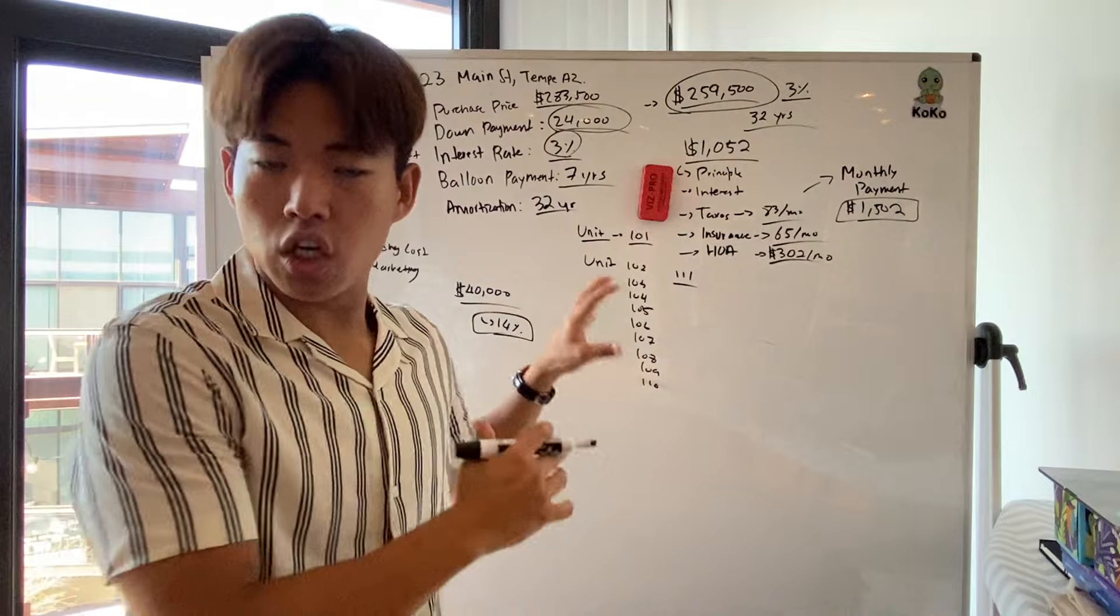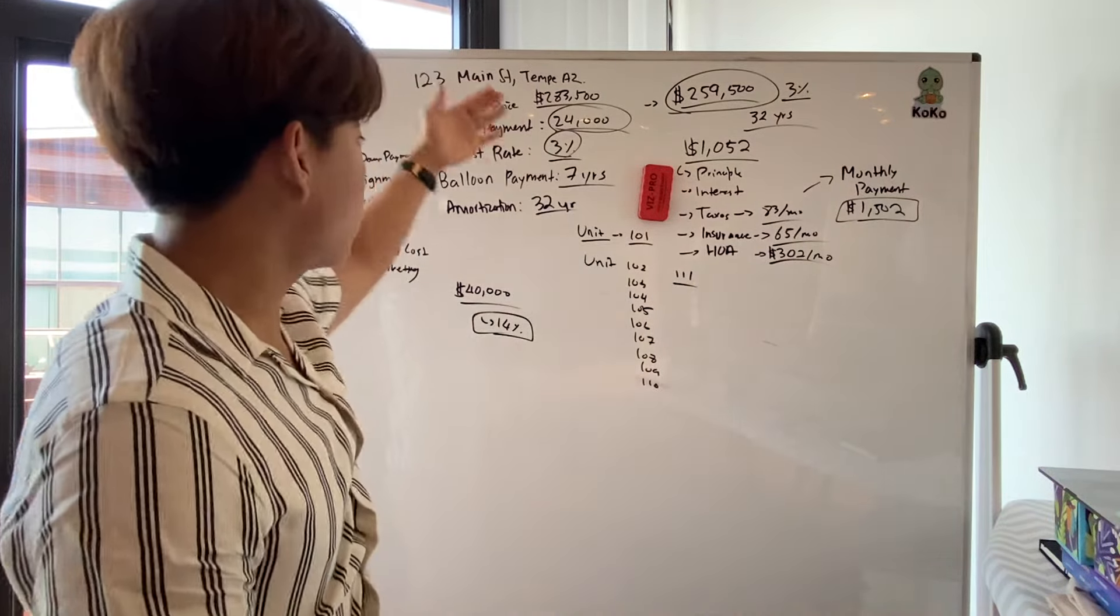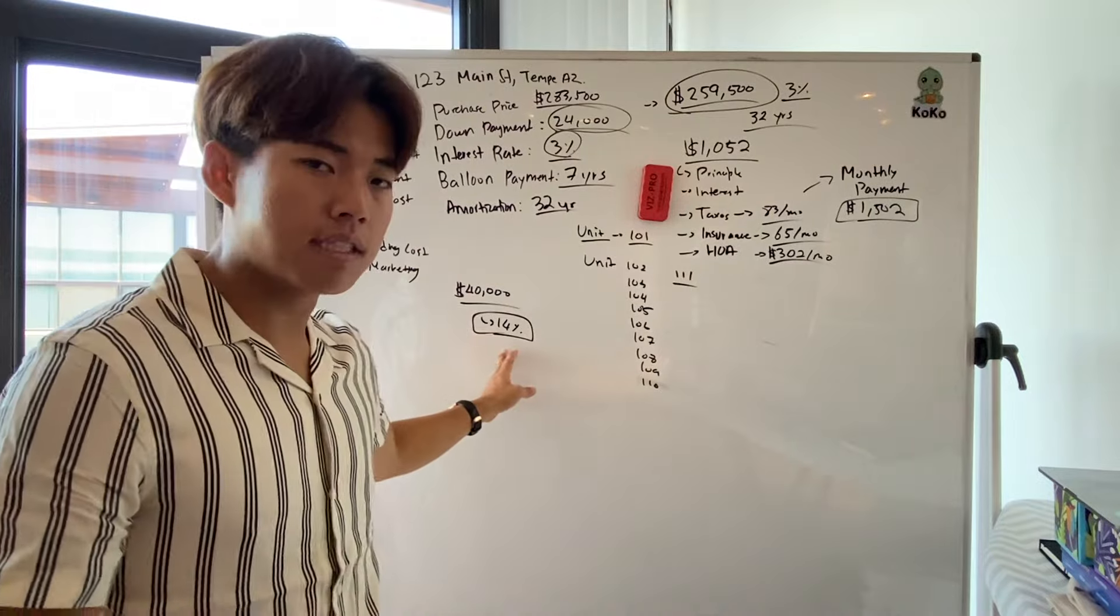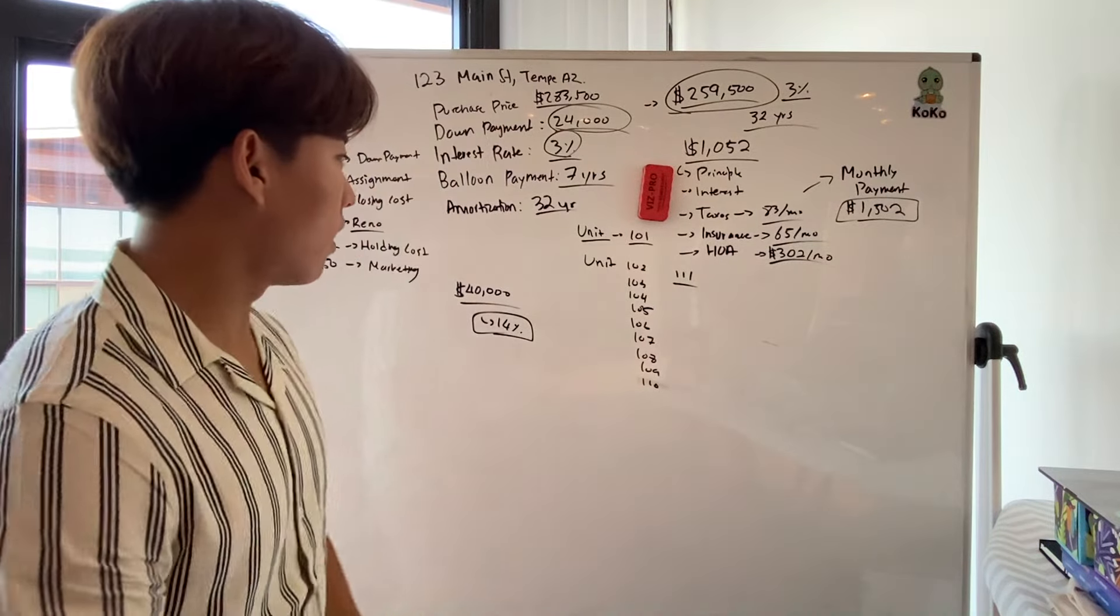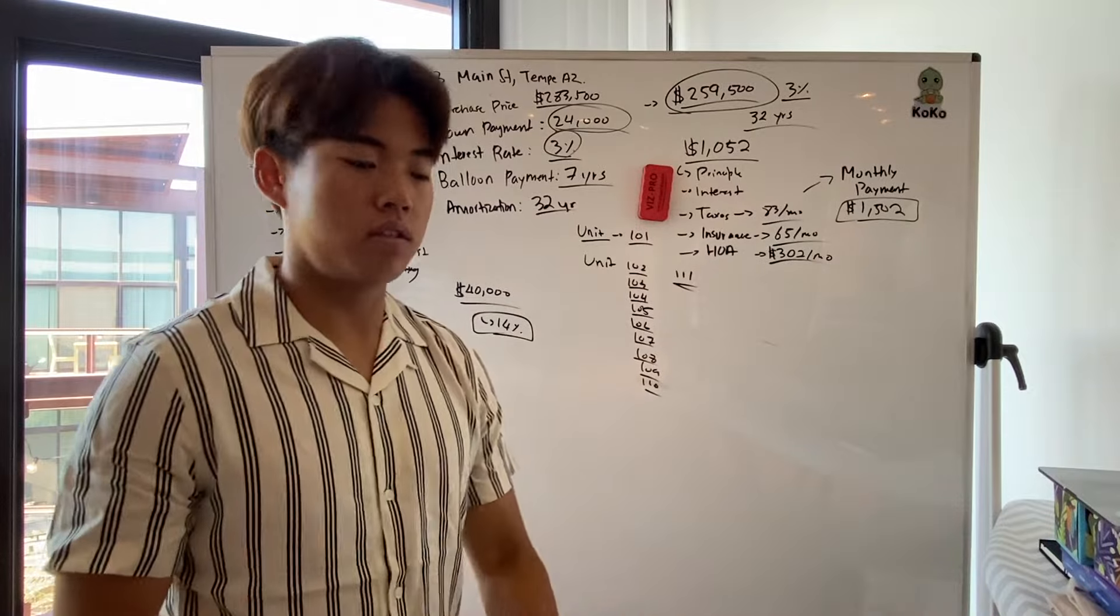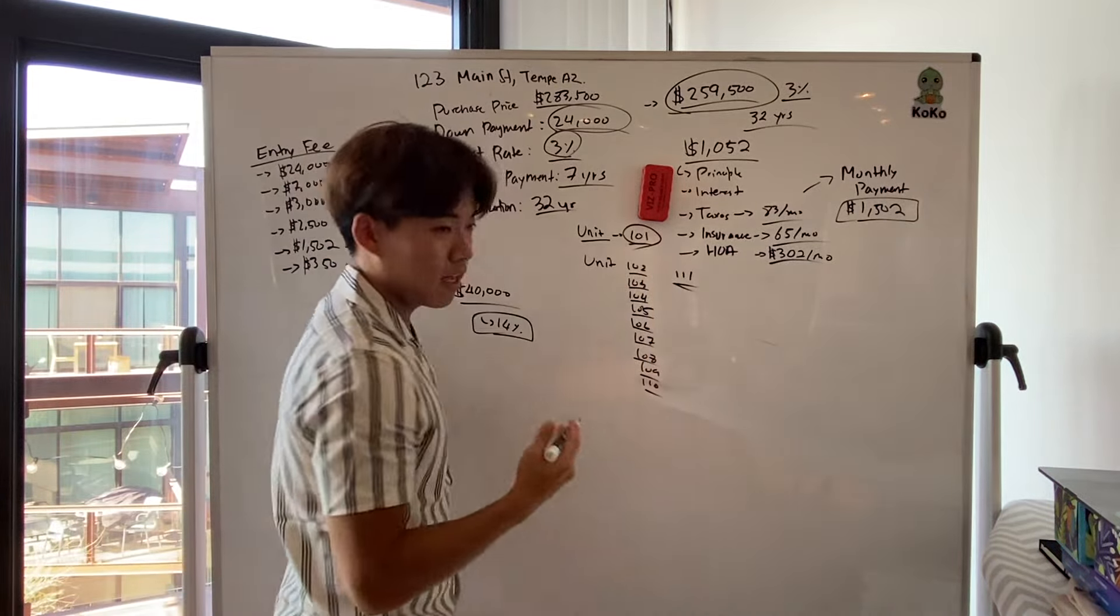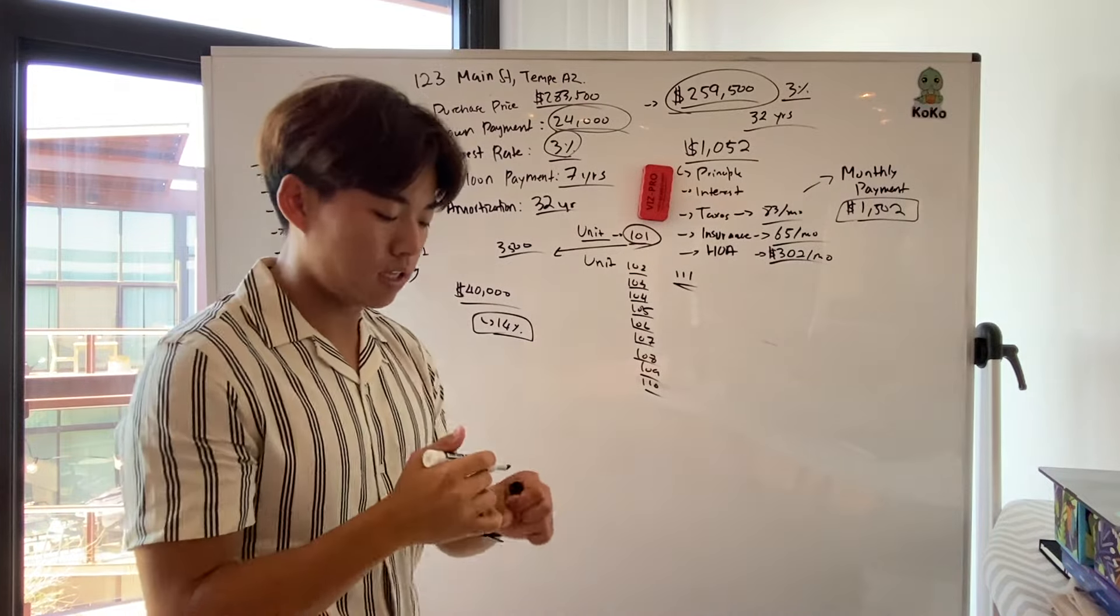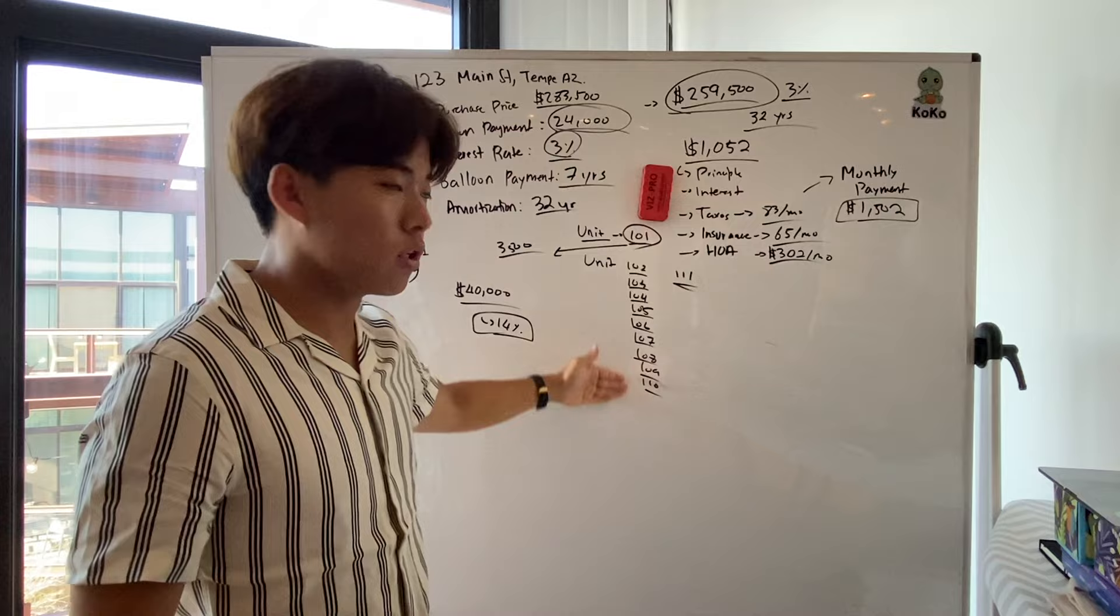This homeowner owns like 12 units just in this complex alone. And Tom already did three seller finance deals from this exact same seller, same exact terms. And it might not be a good deal right now because I'm putting in 14% down payment versus a 10% that I'm comfortable with. But guess what? I have a shot at buying all these units on seller finance and I don't have to ever spend any more money on finding another seller finance deal.